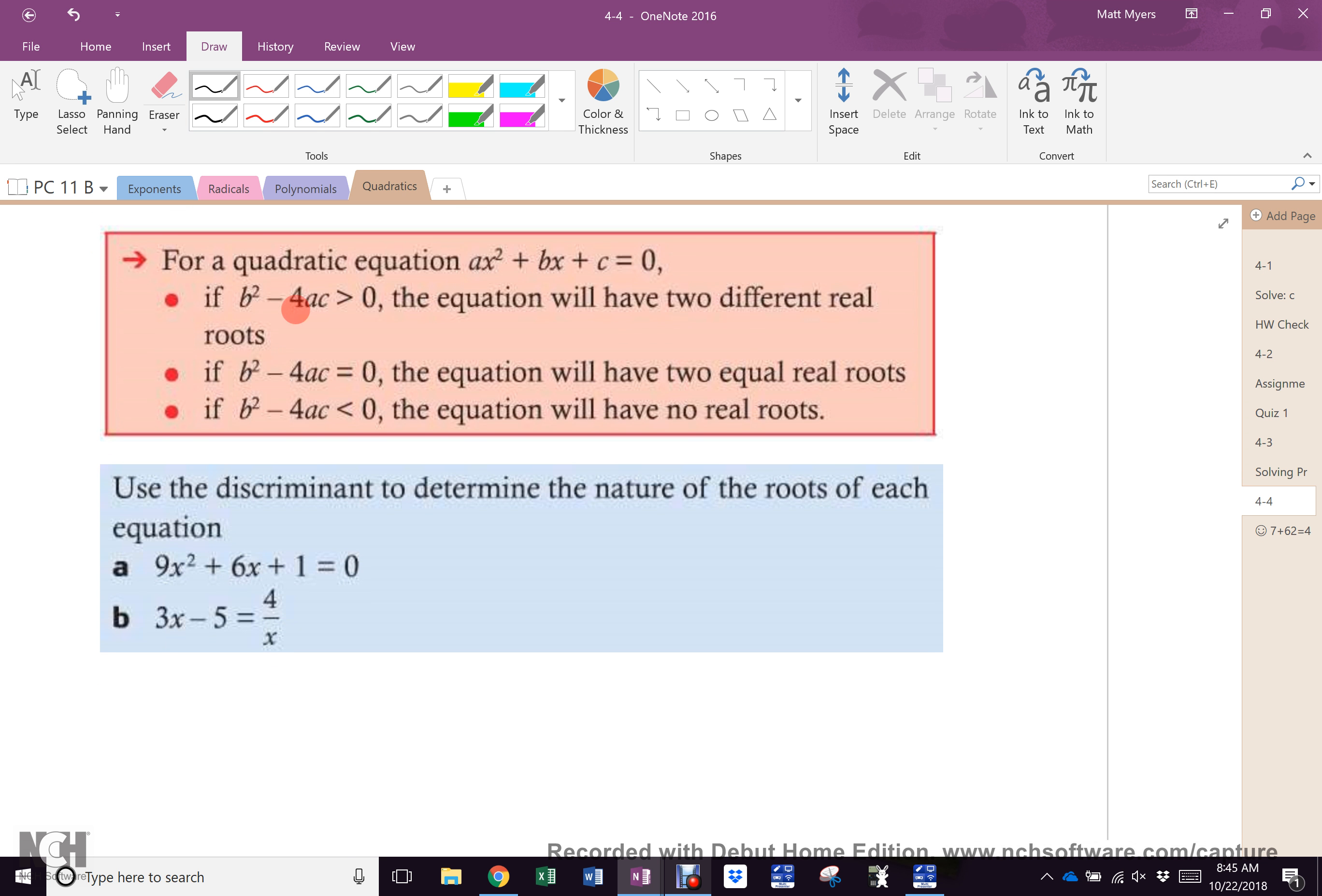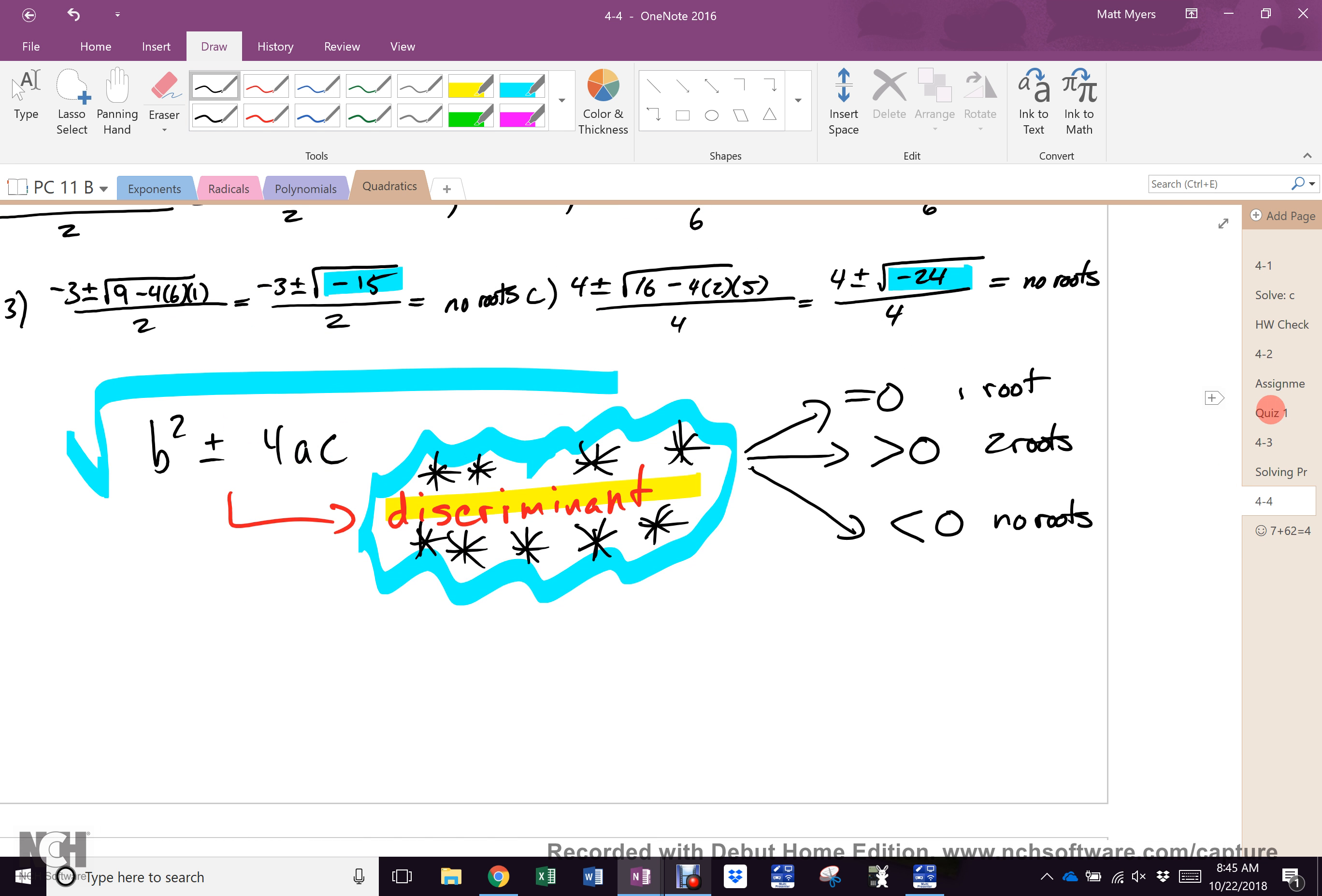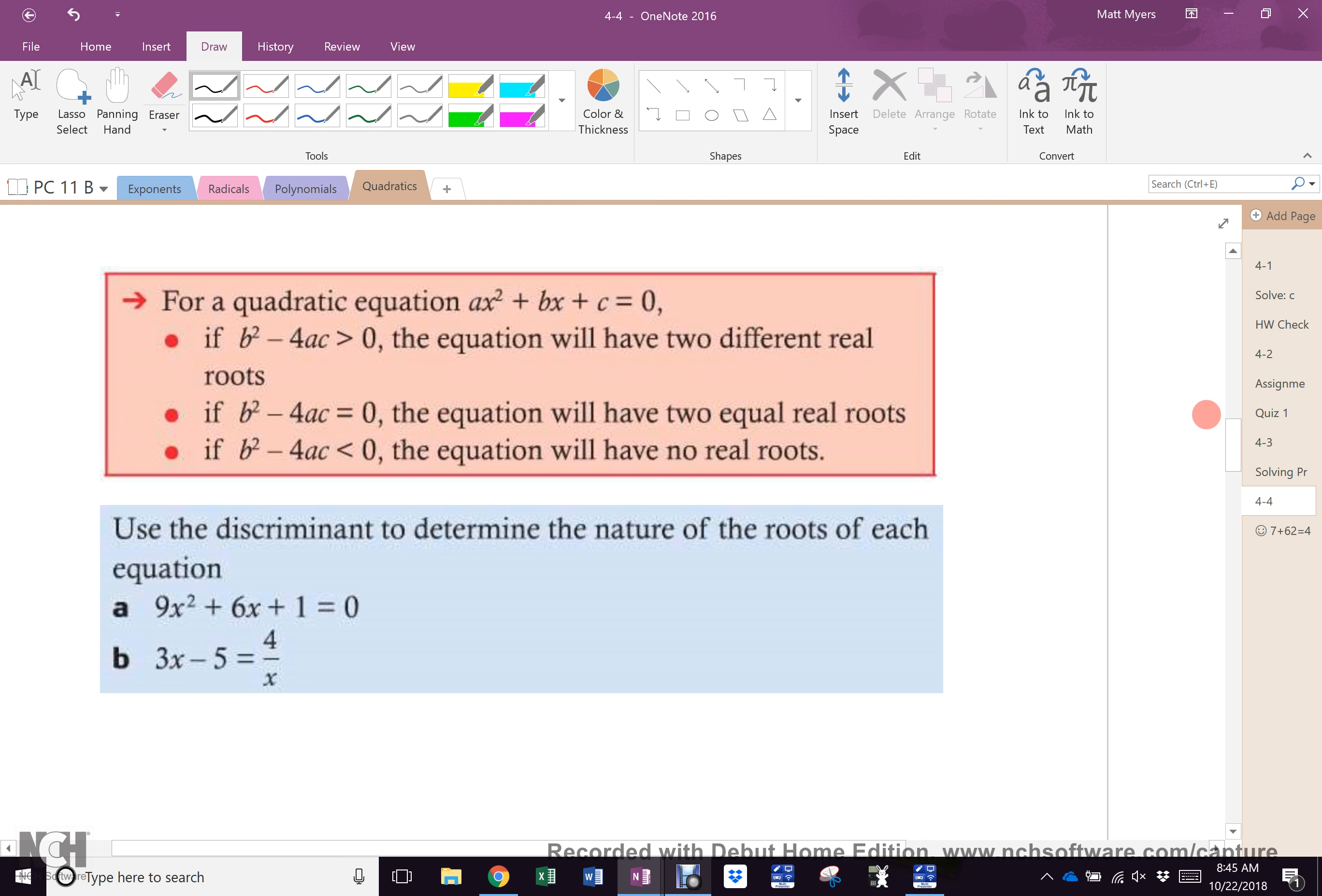When you turn the page over, it is all written there for you. Why did you make us write it out then? Because none of you will read that unless I make you write it out. Read through that red box on the screen, which you also have on page 89. You will notice there is slightly different wording than the wording I just wrote down. I wrote one root, two root, no roots. What do you see in here?